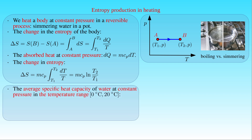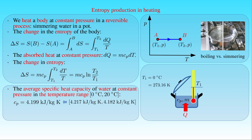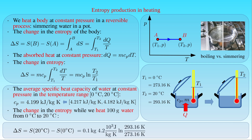In the case of water, the specific heat at constant pressure has a very small change between 0°C and 20°C: at 0°C it is 4.217 kJ/(kg·K) and at 20°C it is 4.187 kJ/(kg·K), giving an average of about 4.2 kJ/(kg·K). If we heat 100 grams of water from 0°C (273.16 K) to 20°C (293.16 K), the change in entropy is 0.1 kg × 4.2 kJ/(kg·K) × ln(293.16/273.16), which gives 29.67 J/K. That is, the entropy of 100 grams of water increases by about 30 J/K while heated from 0°C to 20°C.